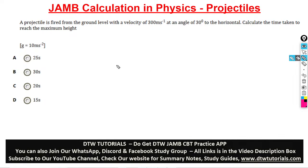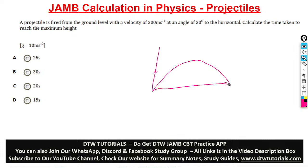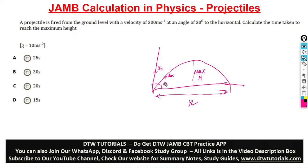Alright, let's get on to the first question. It says a projectile is fired from ground level. When you have ground level, you have your vertical velocity and your horizontal velocity. From here to here, the distance is your range R, and the distance to the highest point is your maximum height. You have u_y, u_x — that's your horizontal velocity — and your angle of projection theta.